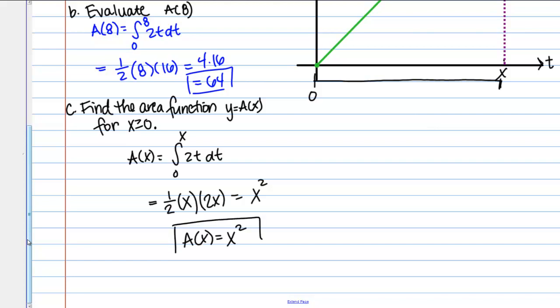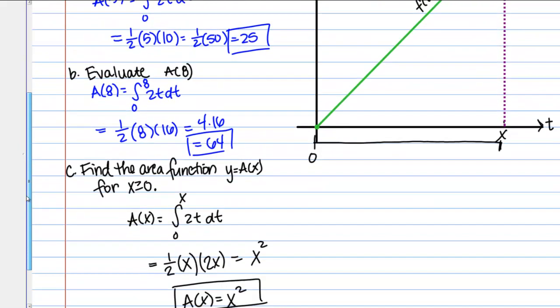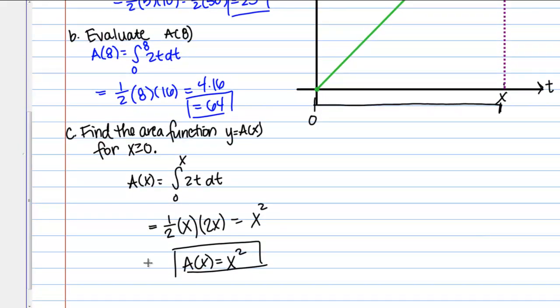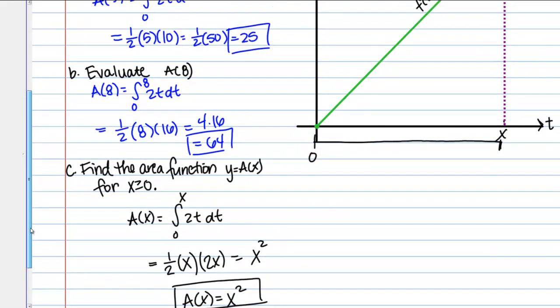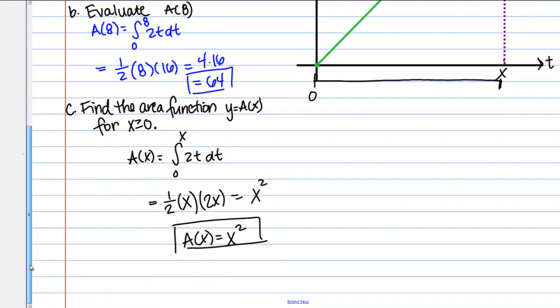Let's see if that agrees with the values we've found so far. When we plugged in 5, A(5), we got 25, so that would agree. 5² is 25. When we evaluated A(8), we got 64. 8² is 64. That makes sense.